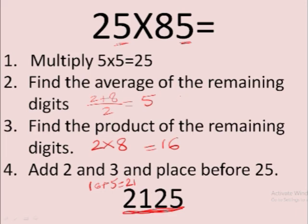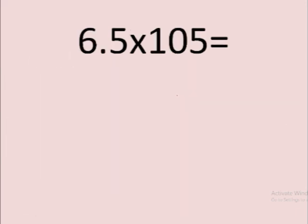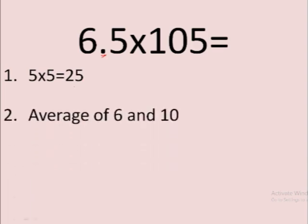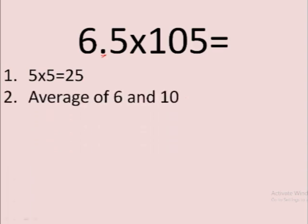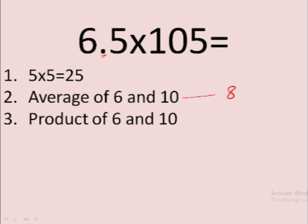Another one: 6.5 × 10.5. So when we are multiplying, we just don't consider the decimal at the moment. The first step is the same—you will get 25. Then 6 and 10, what's the average? 16 by 2, that's 8. And what's the product? That is 60. So if you add them...